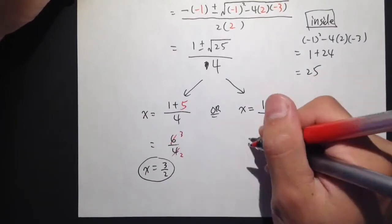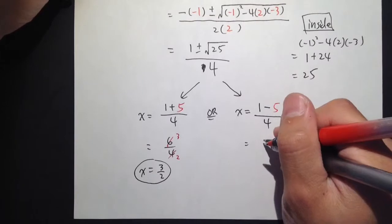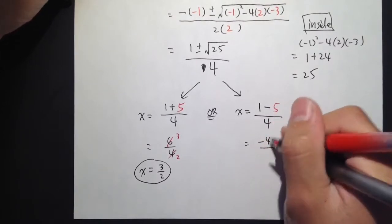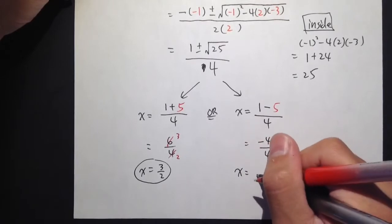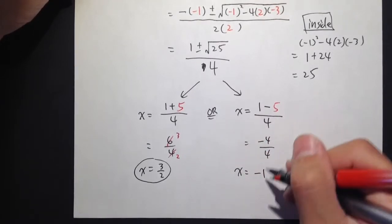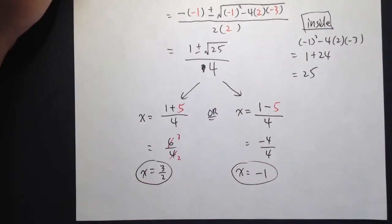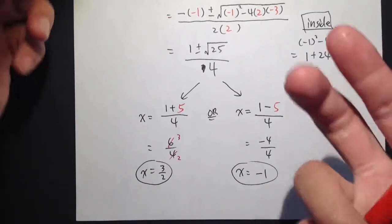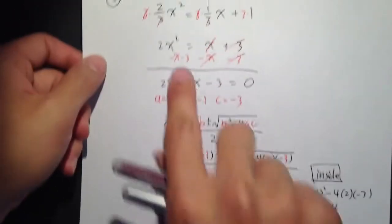Or, another choice, another possibility. 1 minus 5 is equal to negative 4 over the bottom is 4. So in another word, x could also equal to negative 4 over 4, which is negative 1. So both of these could be the answer. Both of these are the solution, actually. Both of these are the solution to the original equation.